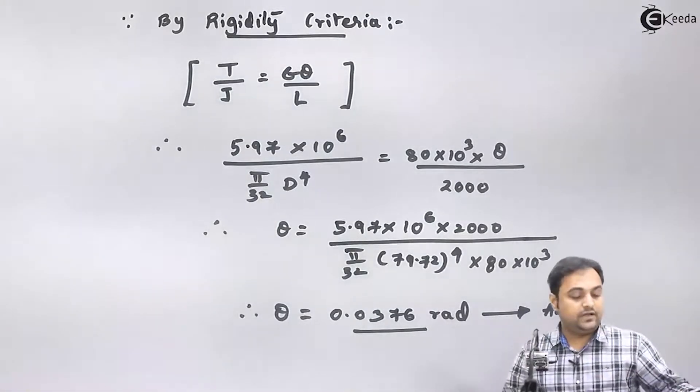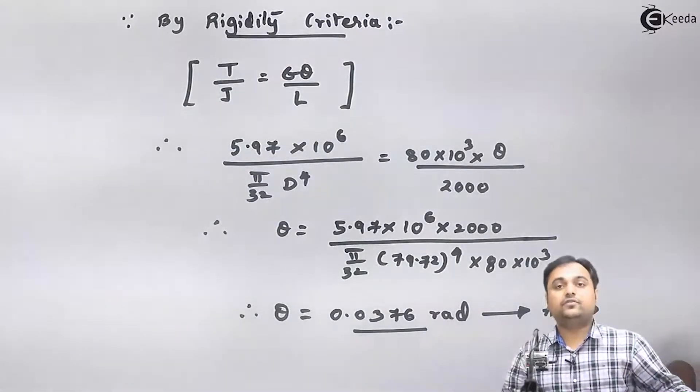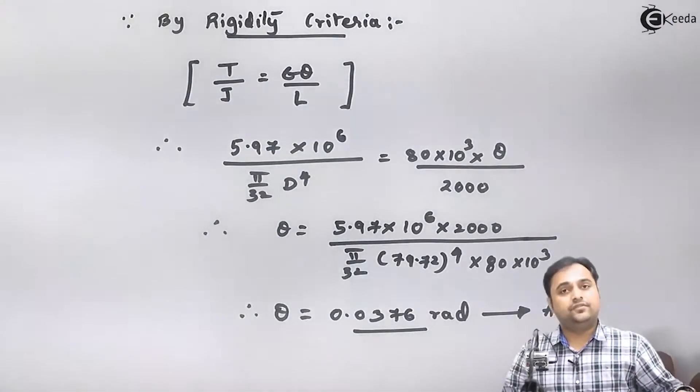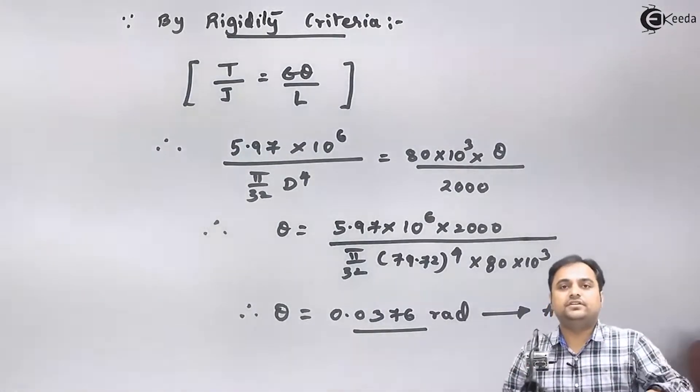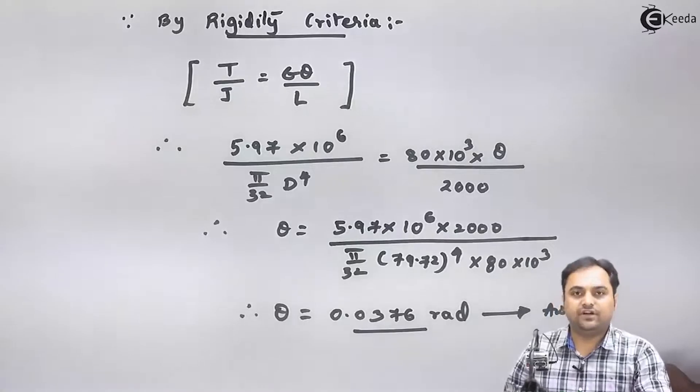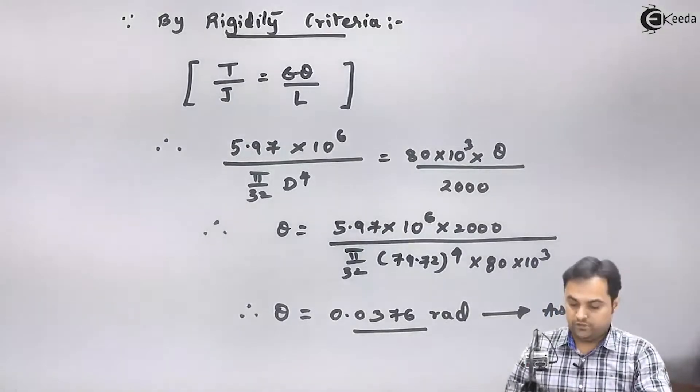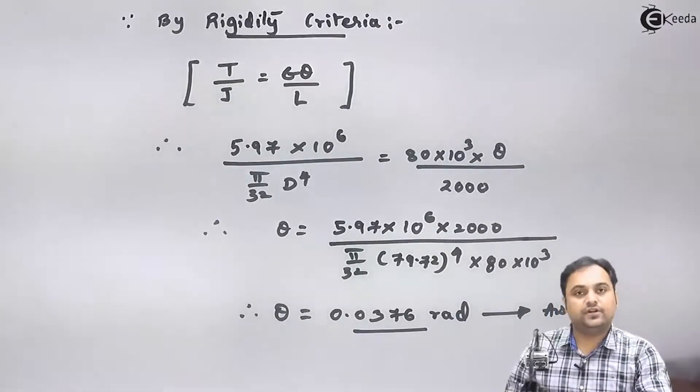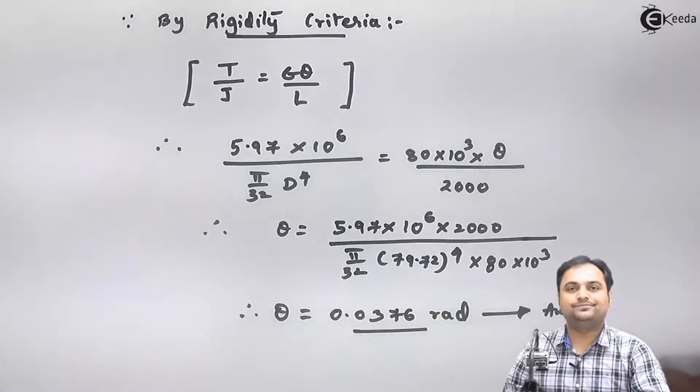So here I have solved this question — we have calculated the diameter of the shaft and also the angle of twist. With this we complete the problem.